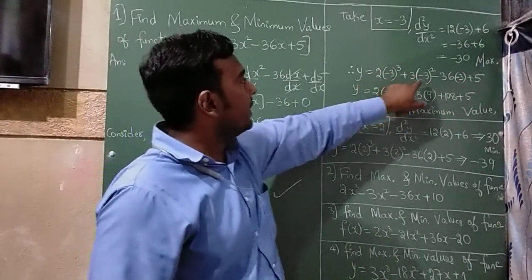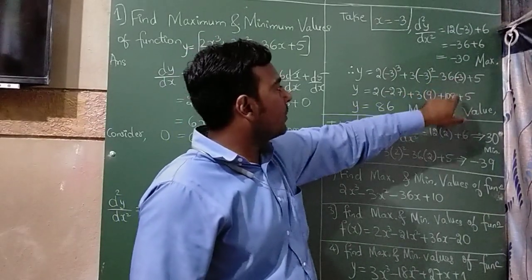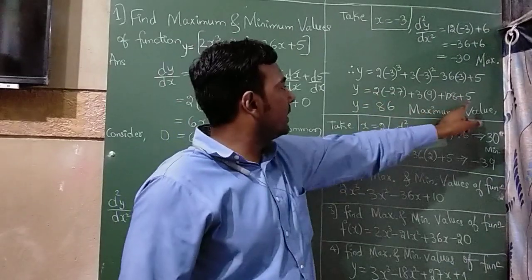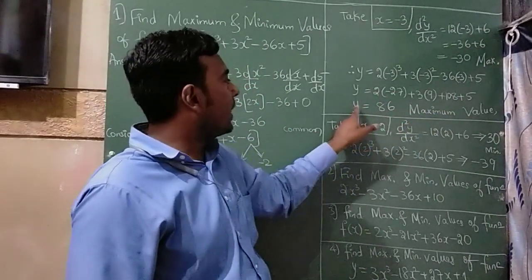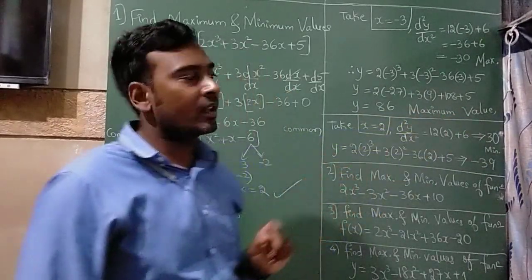So -3 cubed is -27, -3 squared is 9. And if you multiply minus into minus, it is plus 36 times 3 is 108. If you calculate this, you will get a positive value, that is y = 86. So this is your maximum value.